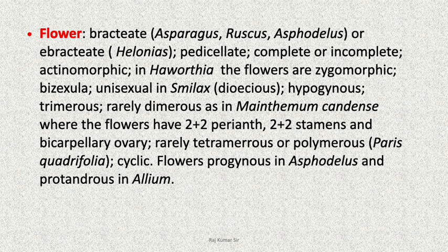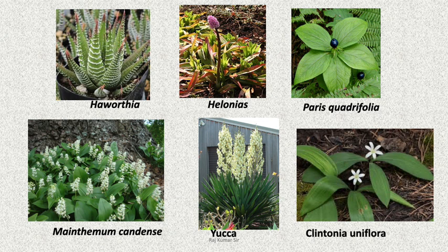Flowers are protogynous in Asphodelus and protandrous in Allium. These are the photographs of Haworthia, Helonia, Paris quadrifolia, Maianthemum canadense, Yucca, Clintonia uniflora.